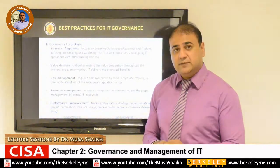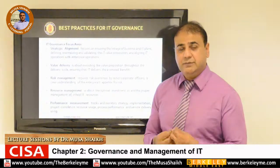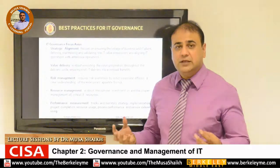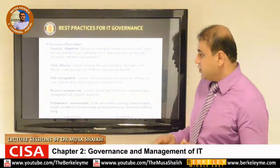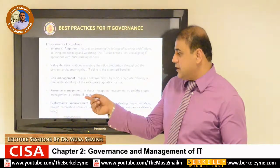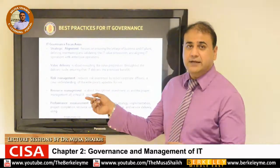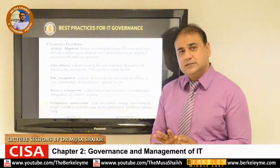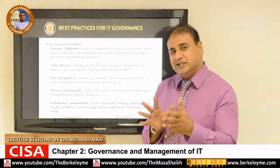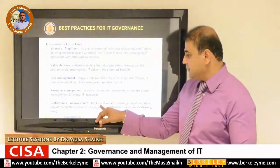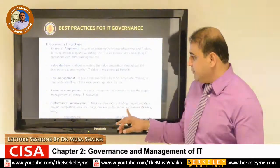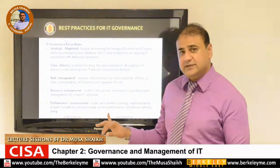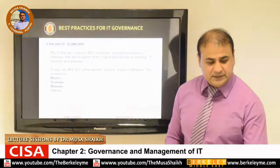In terms of resource management, we should have effective resources that are sufficient and capable of giving adequate assurance in terms of corporate governance — especially when we talk about IT resources, human resources, and competency and capabilities. For performance management, we should have key criteria already established so we can assess governance performance. We can track and monitor strategies, see project completions, resource usage, process performance, and service delivery through effective information systems.